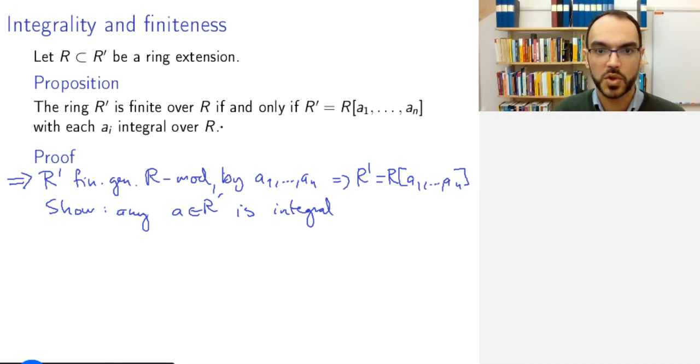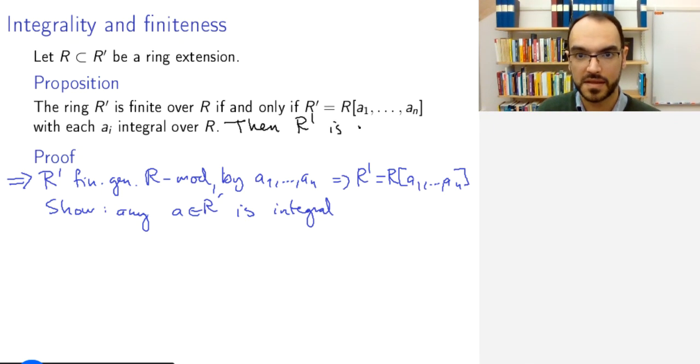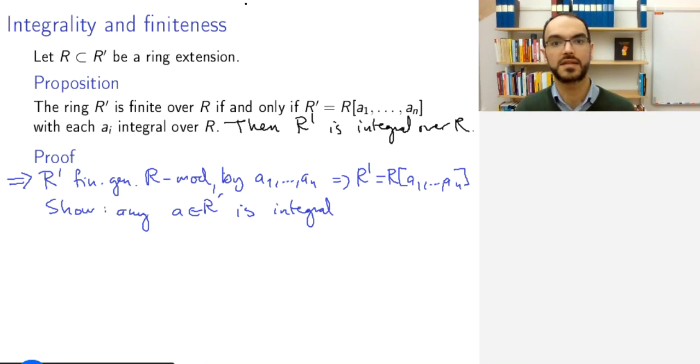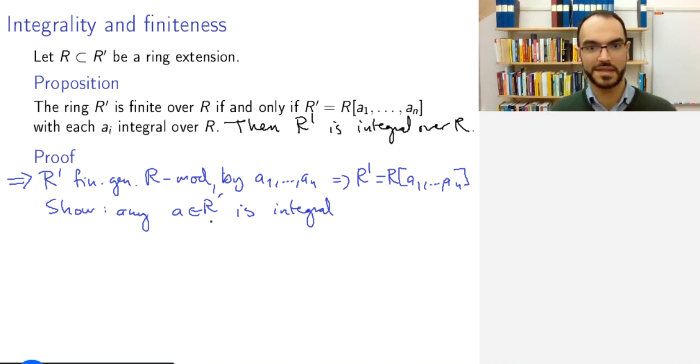When we use square brackets, we mean generated as an R-algebra. So what we need to show is that all these a_i are integral, but we will show more. We will show that any a in R' is integral. And so in fact, we are showing more than what the proposition says, we show that if this holds, then R' is integral over R. It's an integral ring extension.